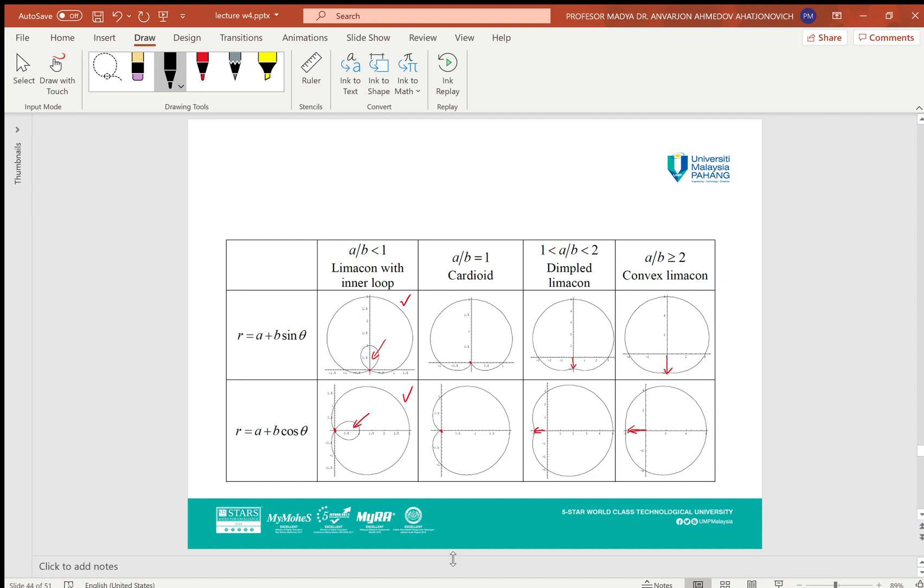If a/b is between 1 and 2, the edge will be escaping from the center. If a/b > 2, it will be close to a circle but still have some convex limacon shape.